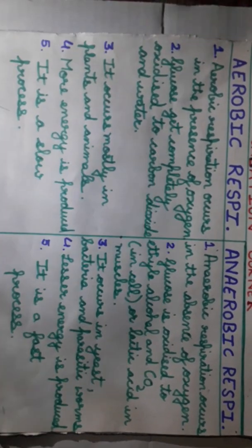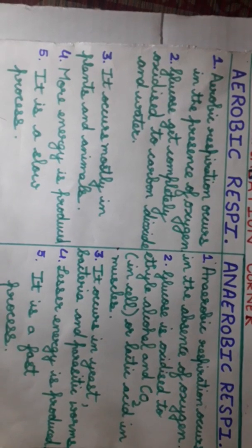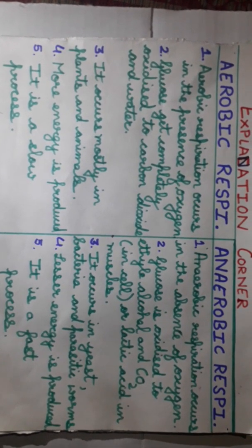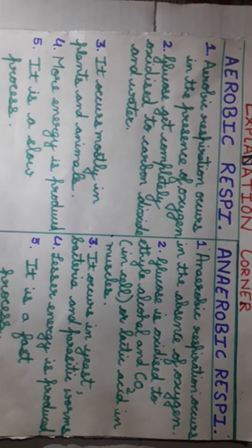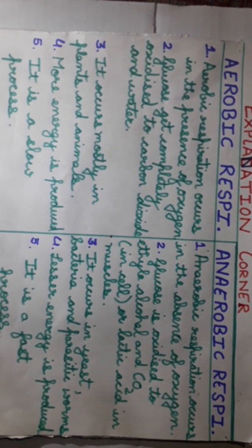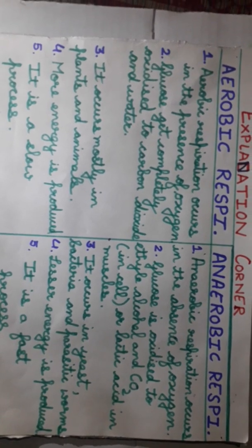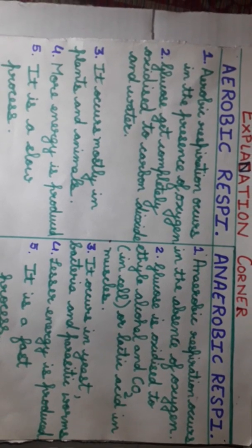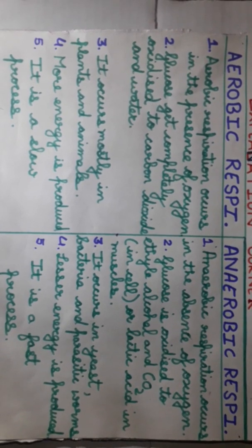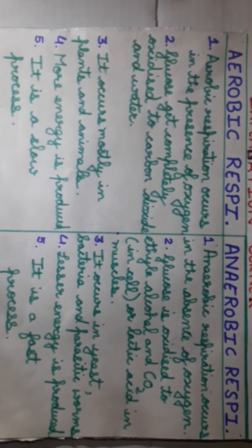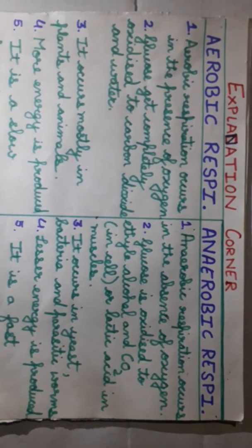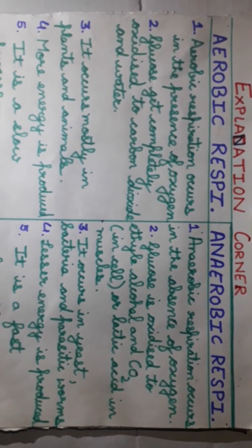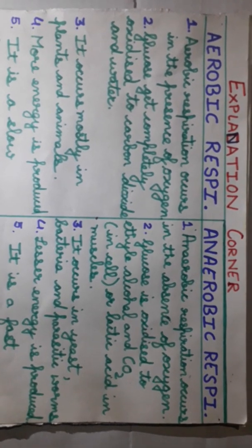In anaerobic respiration, glucose is oxidized to ethyl alcohol and CO2 in cells, and to lactic acid in muscles. Cells mein hamara food digest hota hai aur oxidized hota hai — ethyl alcohol mein aur CO2 mein. Aur jo muscles mein anaerobic respiration hoti hai, usme lactic acid produce hota hai.